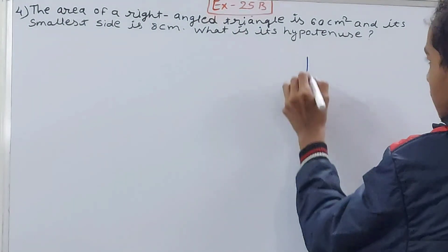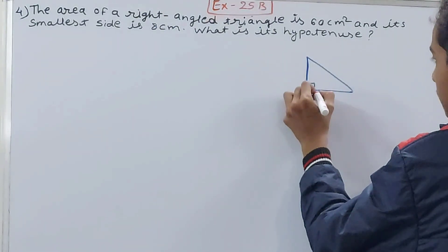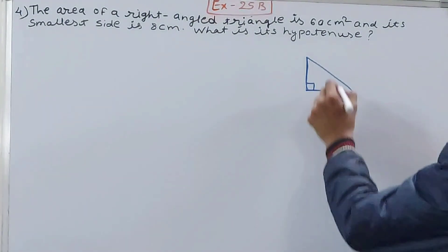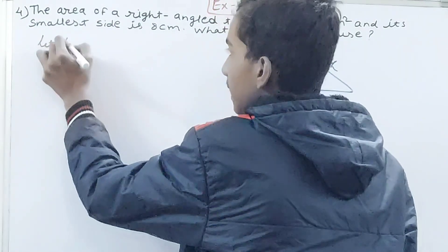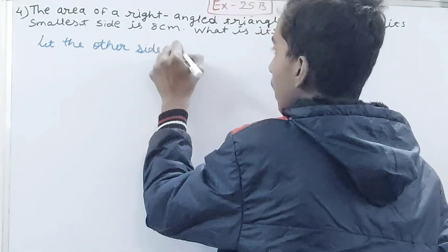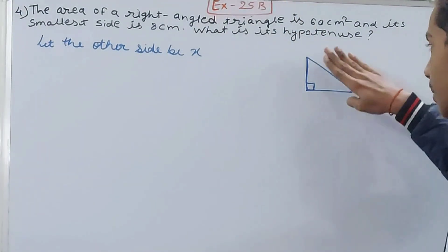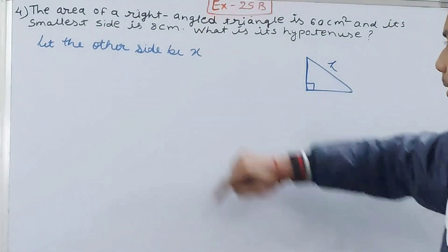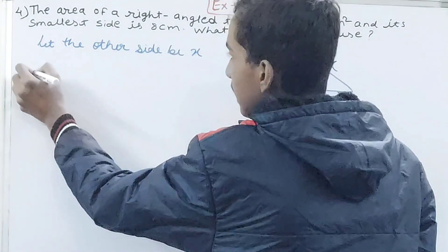What is a right-angled triangle actually? It has a right angle, two sides, and one hypotenuse. The hypotenuse is the longest side, and that is what has been asked. One side out of the two legs is 8 centimeters and the other side we don't know, so let the other side be X.